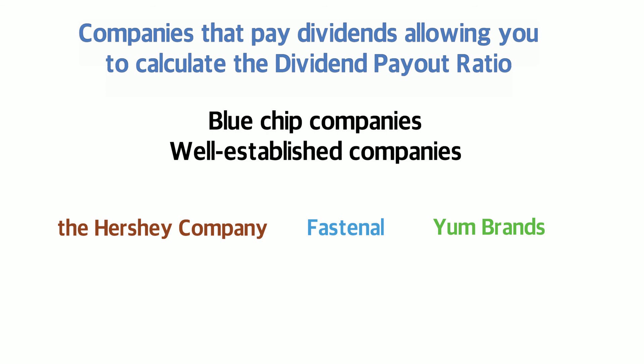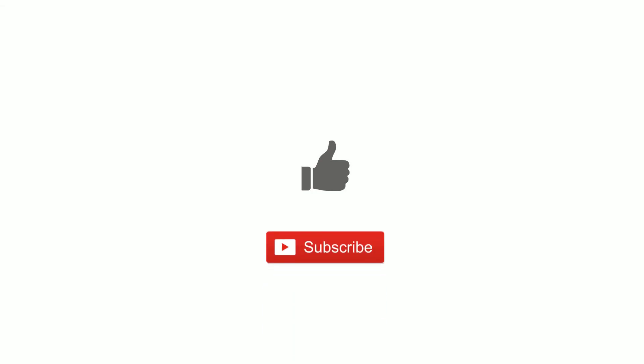So the dividend payout ratio is just one metric you want to look at when evaluating a dividend paying company. We'll look at the other metrics in a different video, and I'll put all these different videos in a playlist so it'll be easy to watch them back to back. If you have any comments or questions, put them in the comment section below. If you enjoyed this video, hit the like button and don't forget to subscribe to my channel.